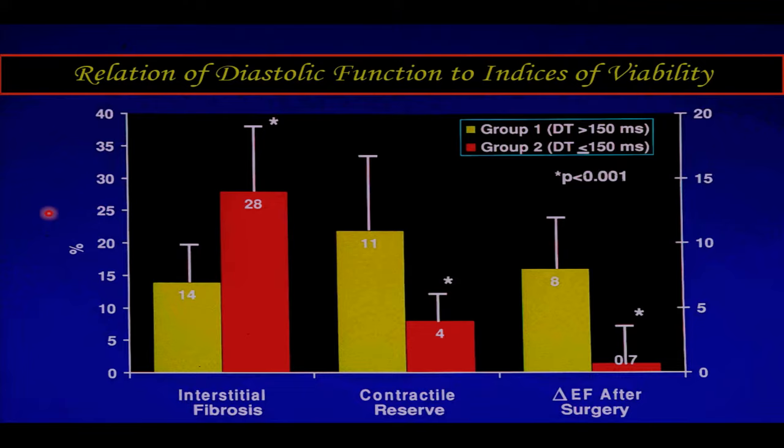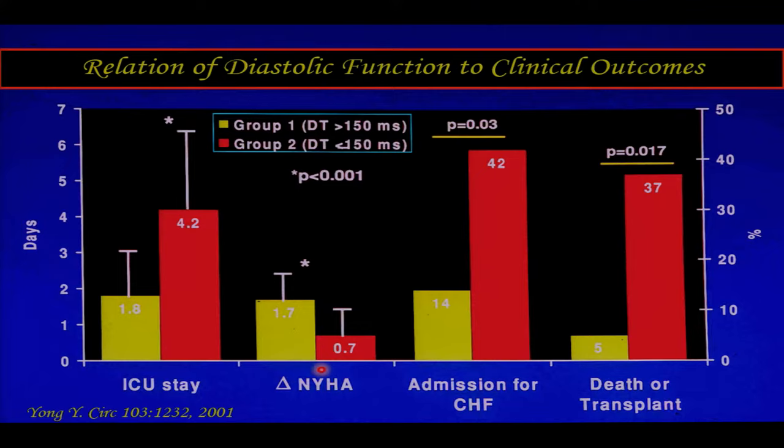If you have this slow relaxation adapted to a depressed ventricular function, there is less interstitial fibrosis at pathology, better contractile reserve, more change after surgery, less ICU stay, better New York Heart Association class down the line, and less admissions for heart failure and less death or transplantation.